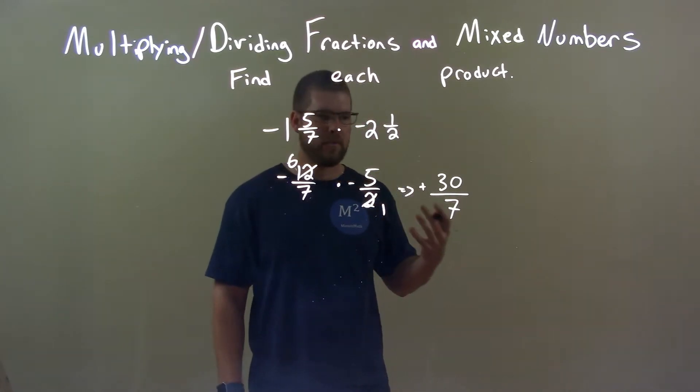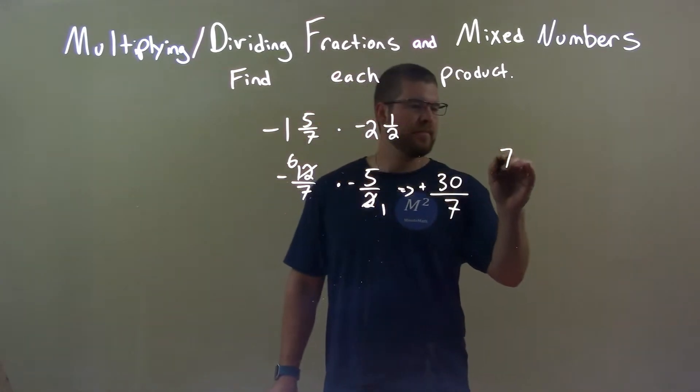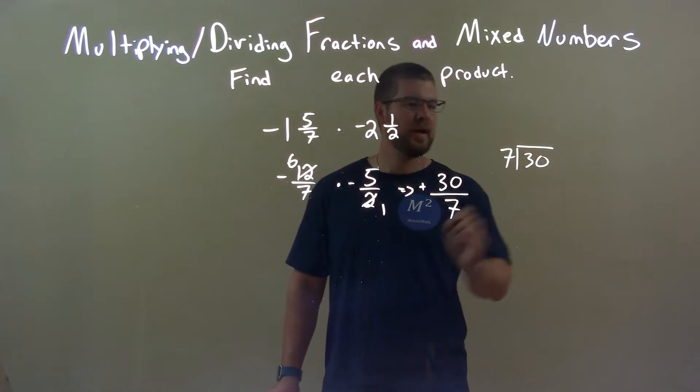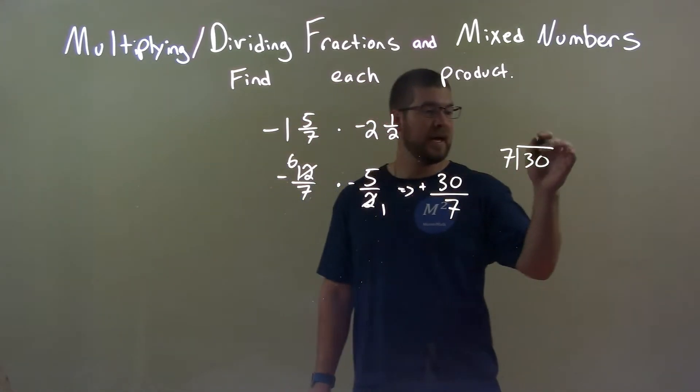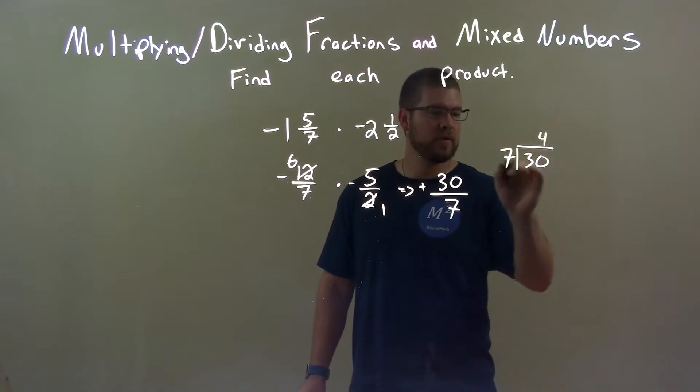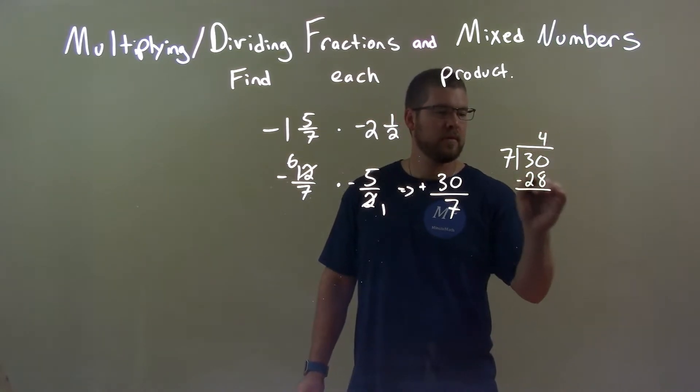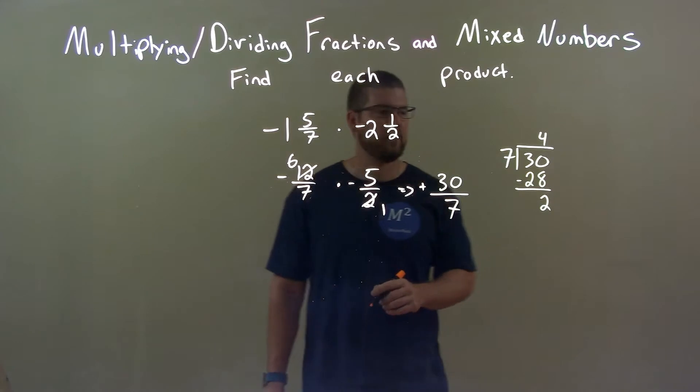So, now let's write that as a proper fraction. Well, 7 goes into 30, right? How many times? How many times evenly? Well, 7 goes into 28, 4 times. So, 4 here, 4 times 7 is 28. Subtract the 2, and we have 2 left over.